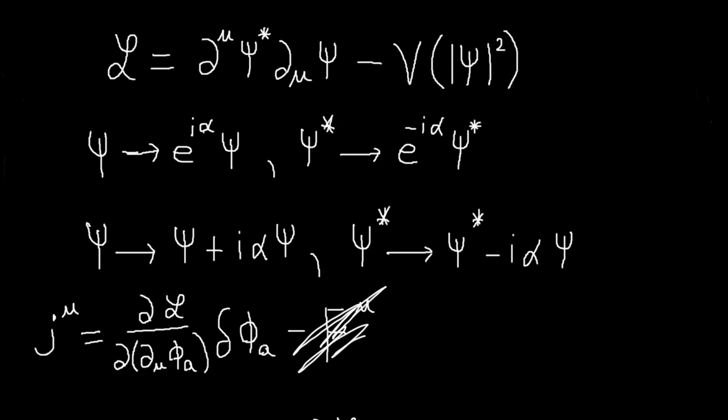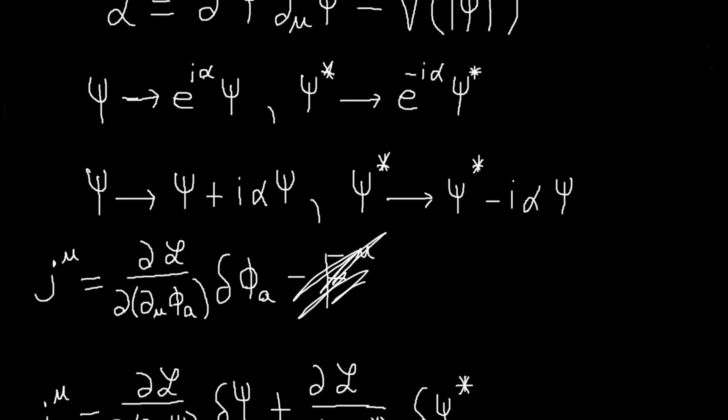Another difference here is, so again, this a here, we're summing over the field. So we're treating for a complex scalar field, we're treating psi and psi star as independent. So we're going to have two of these terms, one for psi, one for psi star.